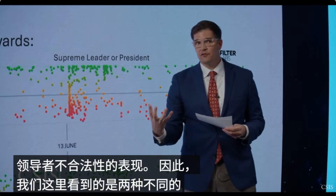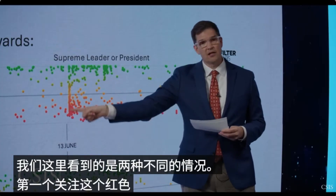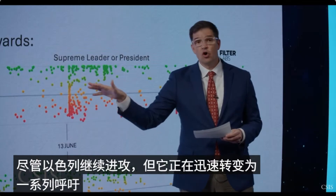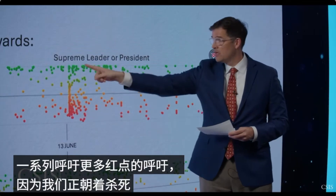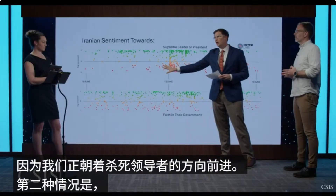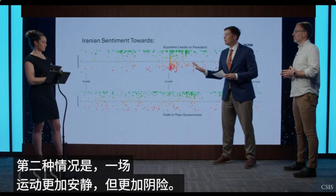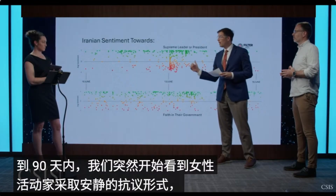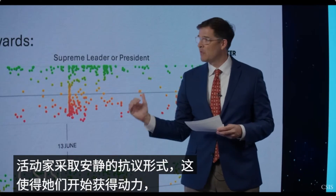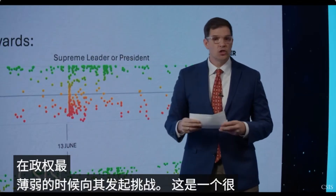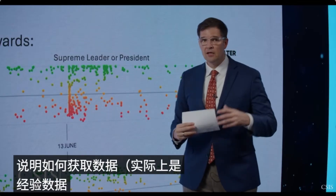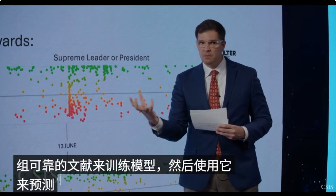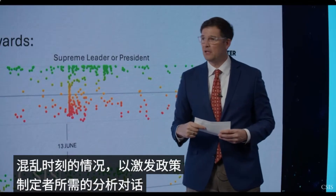So what we have here are two different scenarios. The first focuses on this red cluster quickly translating, despite Israel continuing to attack, into calls for death to the leader. The second looks at a quieter but more insidious movement, where within the next 30 to 90 days we start to see women activists engage in quiet forms of unrest that gain momentum and challenge the regime at its weakest point. This is a good example of how you can take empirical data, train models using a robust set of literature, and then use it to predict scenarios in a particularly chaotic moment to spark the type of analytical dialogue that policymakers need.